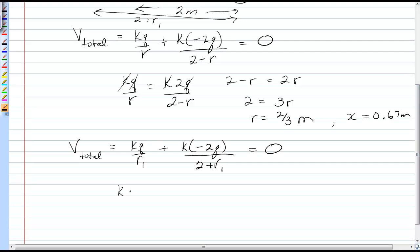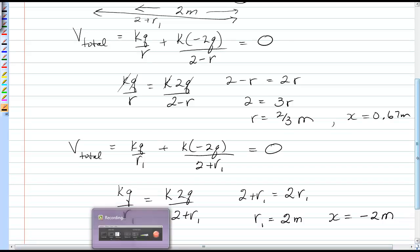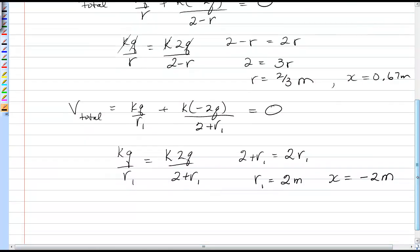So solving that, I get that kq over r1 must equal k2q over 2 plus r1, or 2 plus r1 is equal to 2r1, or r1 equals 2 meters. But because I'm left of the origin, the answer would be x equals negative 2 meters. And those are the two positions where the voltage due to two point charges are zero.